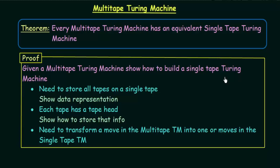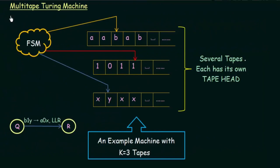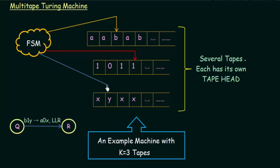Let's take an example. Here we have an example of a multi-tape Turing Machine. This is the computational part, and we have three tapes, each with their individual tape heads. This is one tape with its tape head, this is another tape with its tape head, and this is a third tape with its tape head. This is an example of a Turing Machine with k equal to three tapes, where k represents the number of tapes.